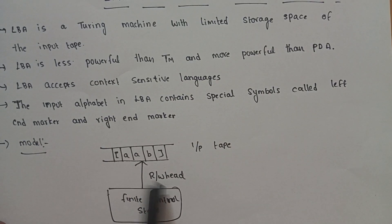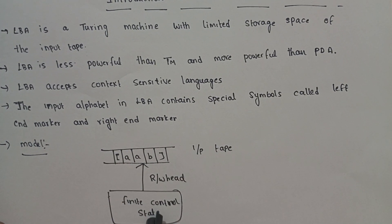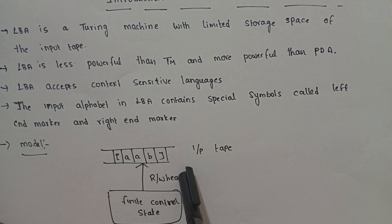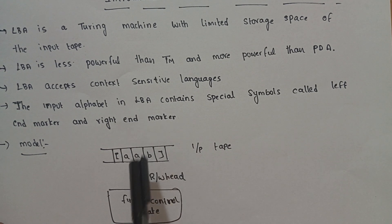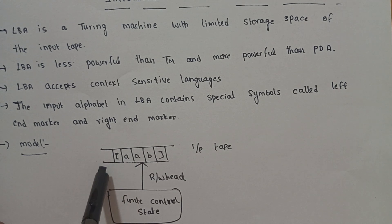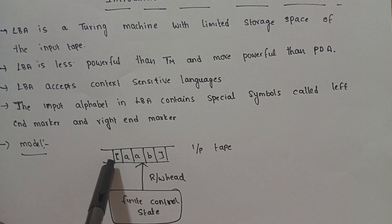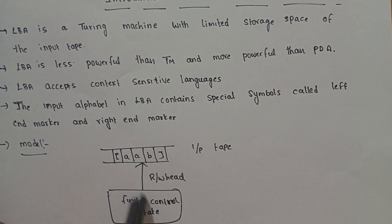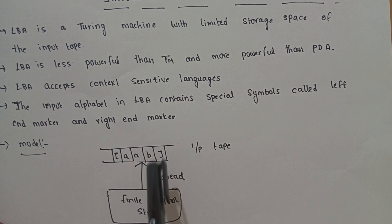Coming to the model of the linear bounded automata: it consists of an input tape, a read-write head, and finite state control. The input tape is divided into equal-size cells, and each cell stores an input alphabet symbol. The input tape is bounded by a left-hand marker and a right-hand marker.